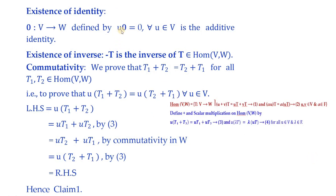The zero homomorphism from V to W, which maps every vector to the zero vector, serves as the additive identity: for all u in V. Then for any T, minus T is the additive inverse of T in Hom(V,W). Since λT is always a member, we can similarly claim that −T is also a member of Hom(V,W).